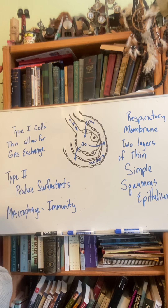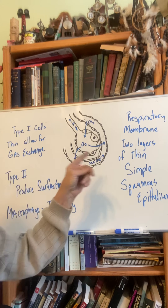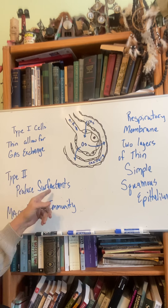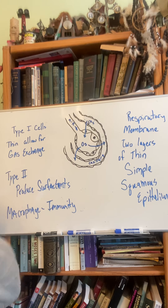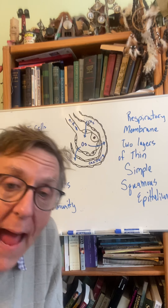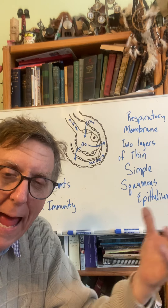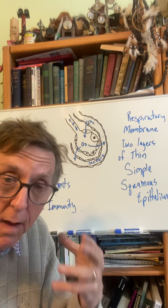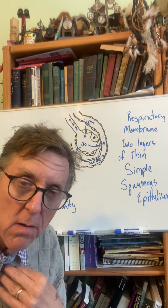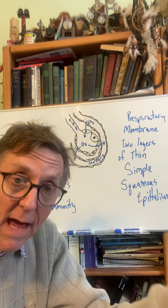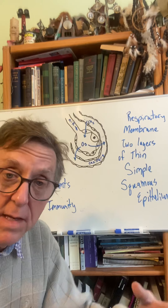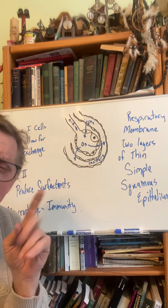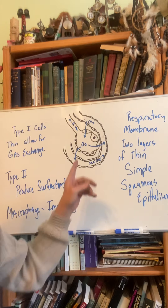So we have Type 1 cells that allow gases to move in and out of the alveoli, Type 2 cells that produce surfactants, and the third kind of cell is macrophages. If you think about how pathogens can enter your body through your lungs — that's a major pathway — you have macrophages there providing surveillance and defense against pathogens.